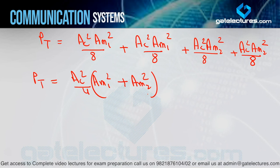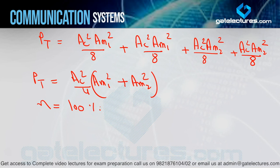So total power for multi-tone DSB-SC = (AC²/4)·(Am1² + Am2² + ...). Compare with single-tone: AC²·Am1²/4 — just replace Am1² with Am1² + Am2² + ... for multi-tone. The logic is simple to remember. Efficiency is always 100% in DSB-SC — whenever you see suppressed carrier, efficiency is always 100%, because there is no carrier term, so sideband power and total power are equal.